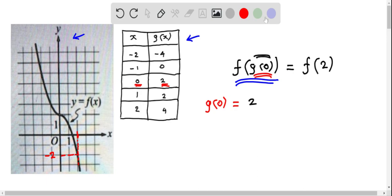Therefore the value of f of 2 is negative 2, and this means we found the value of f of g of 0 equals negative 2.